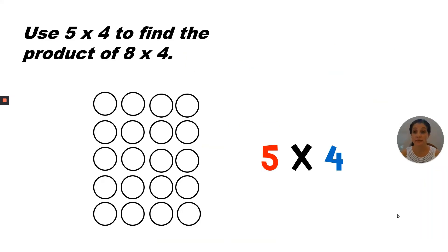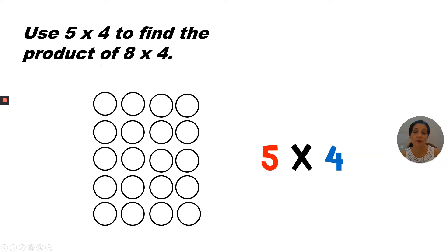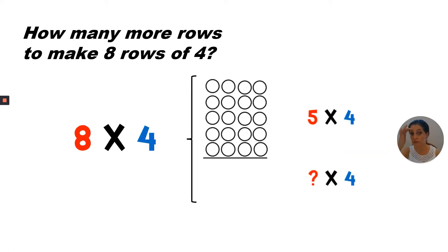Use five times four to find the product of eight times four. How can we do that? Well, first we want to draw a five times four array — five rows with four in each row. But we need to find the product of eight times four, so how many more rows do we need to add? Let's count up from five to get to eight: six, seven, eight. We need three more rows to get to eight.